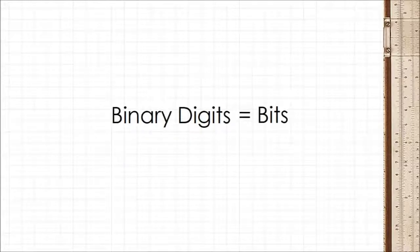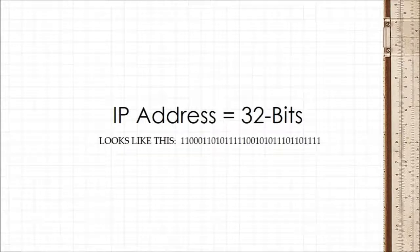A bit can have a value of either 1 or 0, so in effect an IP address is a long string of 32 ones or zeros.